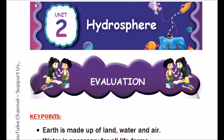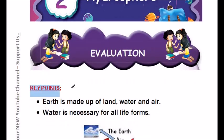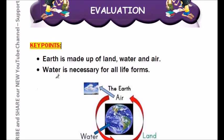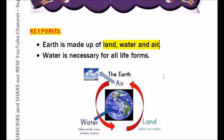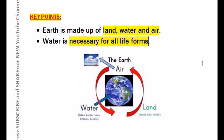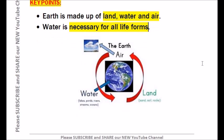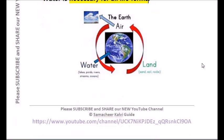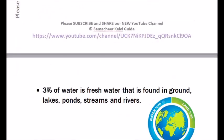Before going into the evaluation part, let us learn the key points once more. Earth is made up of land, water and air. Water is necessary for all life forms, whether it is humans, plants or animals. Of the water available, 3 percent of water is fresh water.